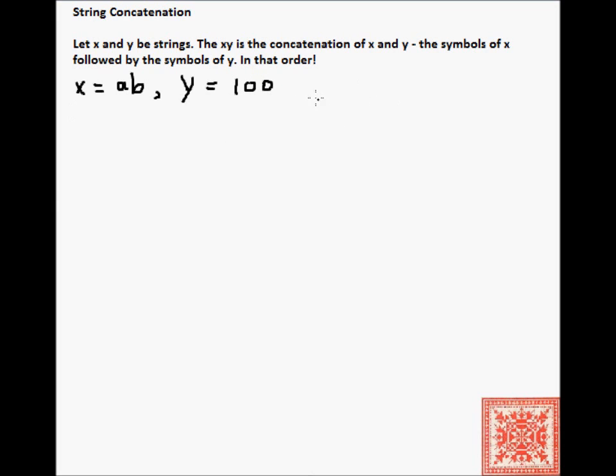If x is equal to ab, and y is equal to 100, then the concatenation of x and y is equal to ab100. There are no spaces in between. Despite my handwriting appears to have spaces between b and 1, there's no space. There's just ab100. Unless space is part of your alphabet, of course, which is not the case in this example.